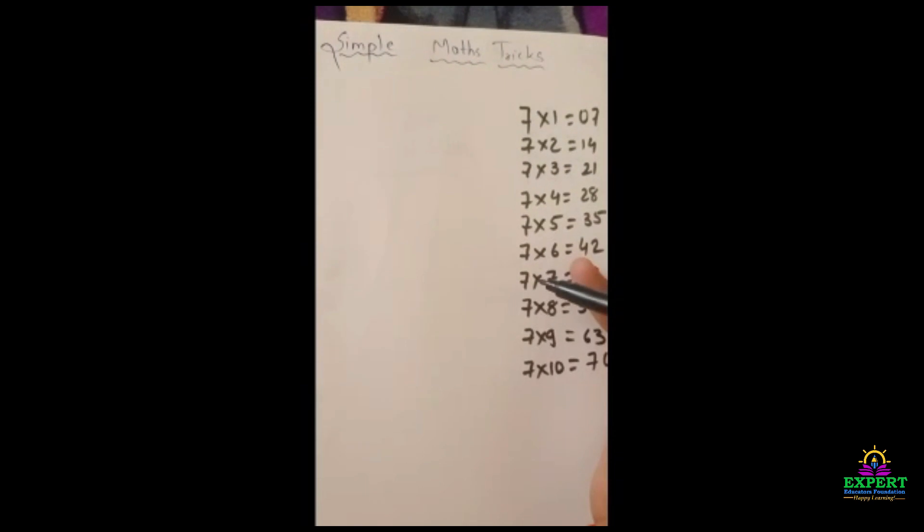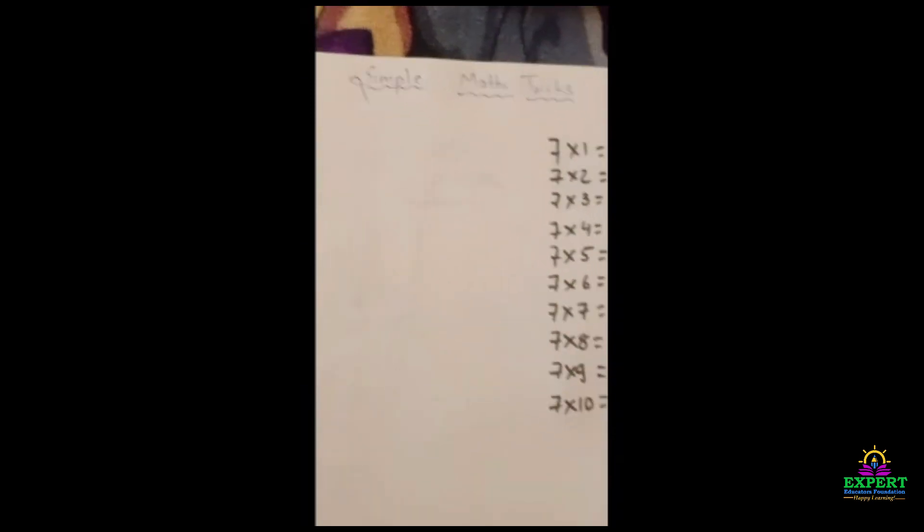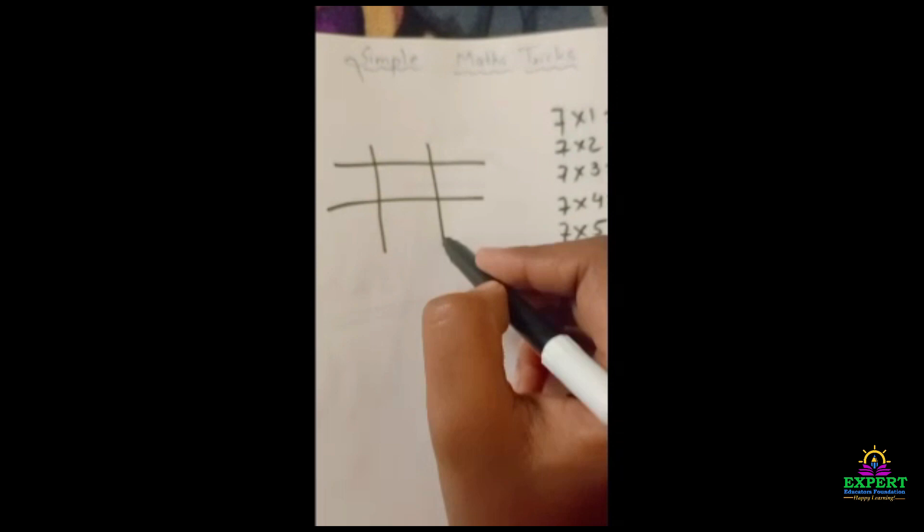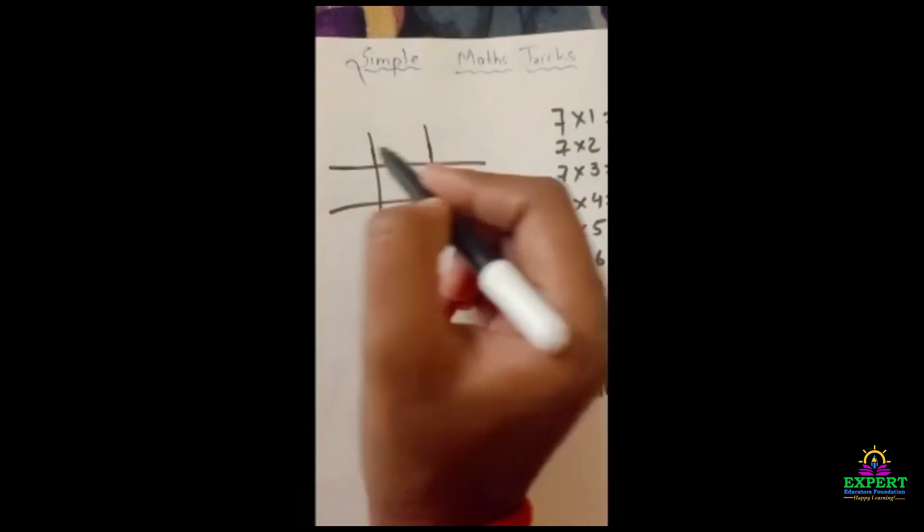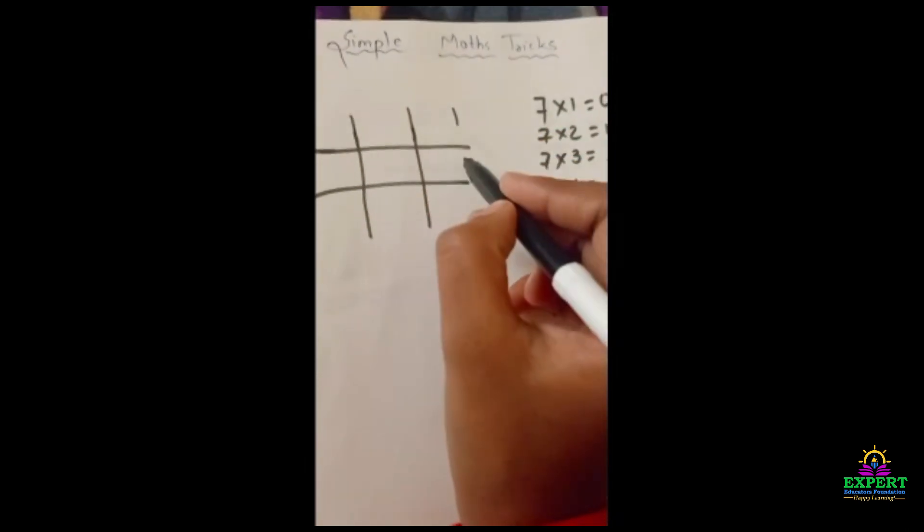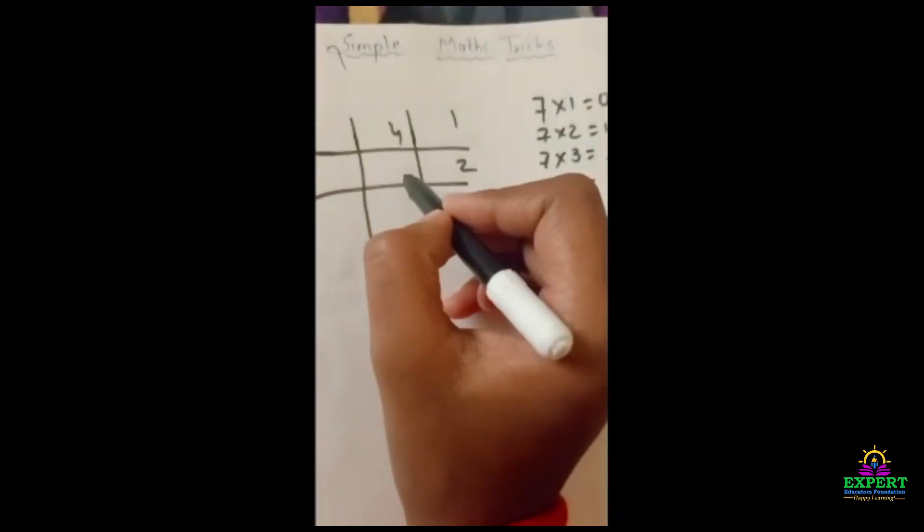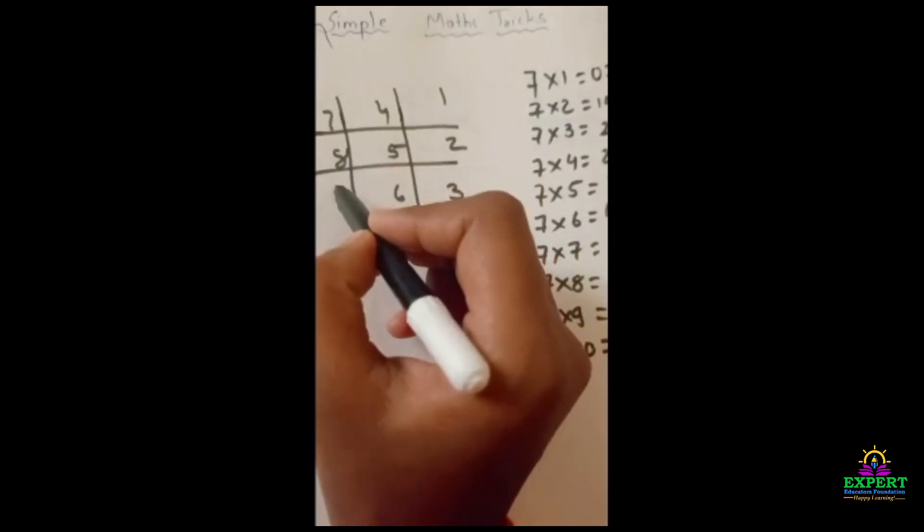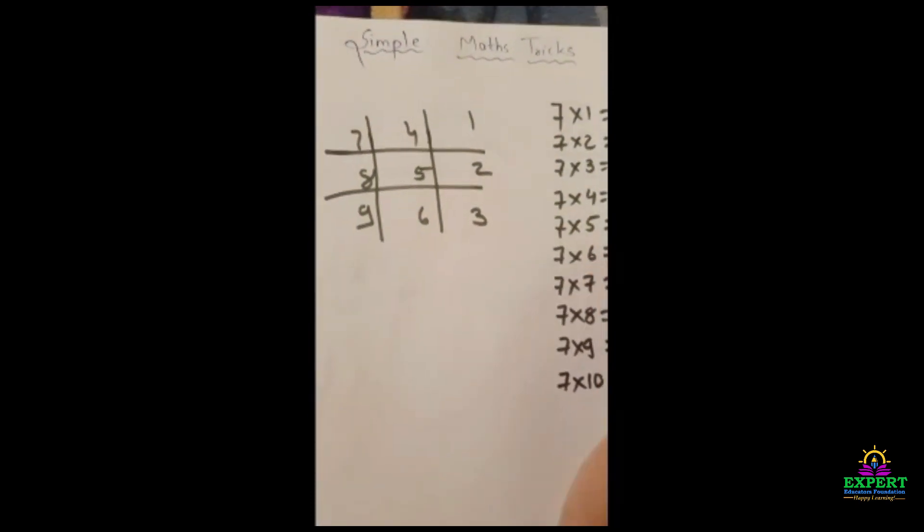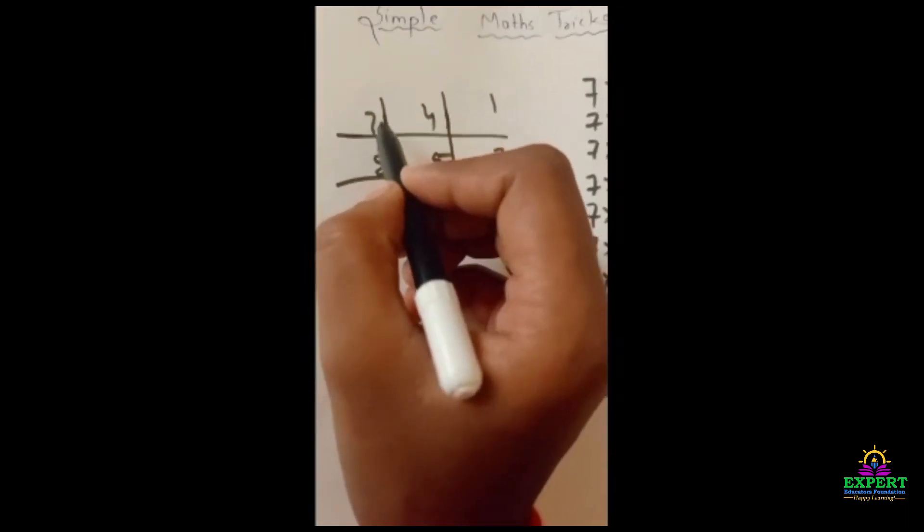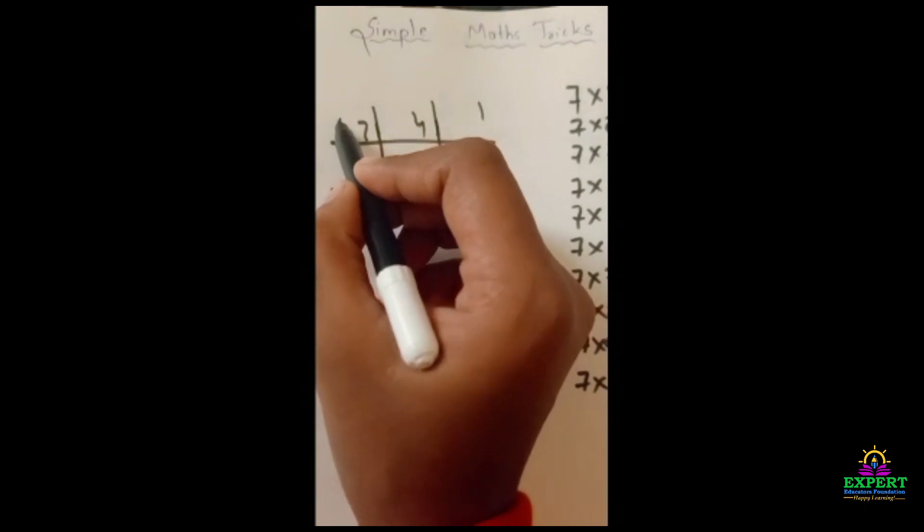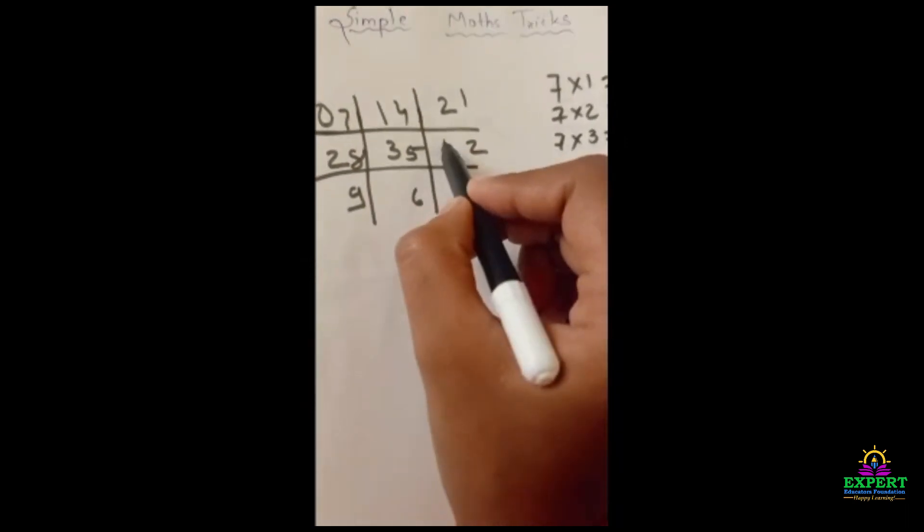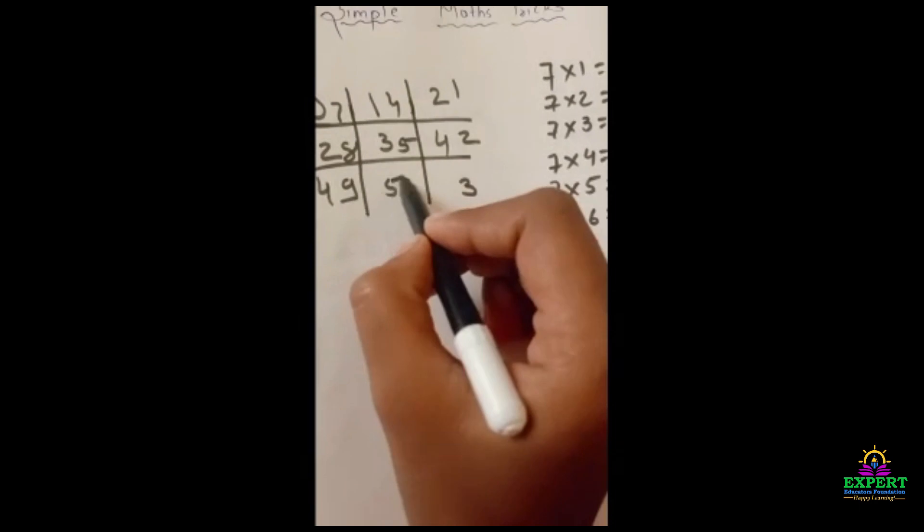I am making here columns, see, like this. Here we have to write 1, 2, 3, 4, 5, 6, 7, 8, 9. Now what we have to do here is, in the column, we have to write 0, 1, 2, again 2, 3, 4, again 4, 5, 6, 70.